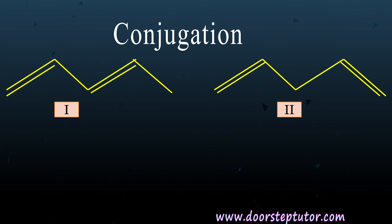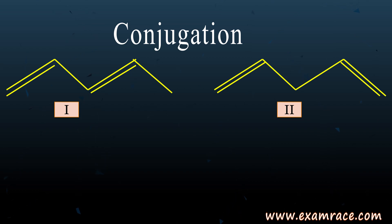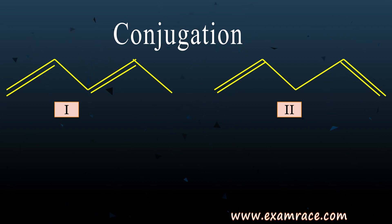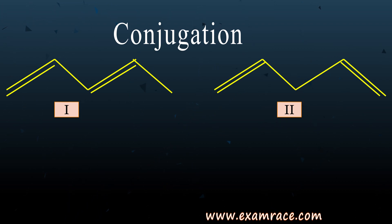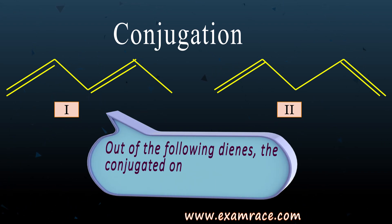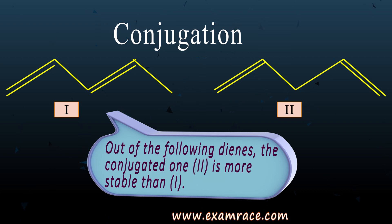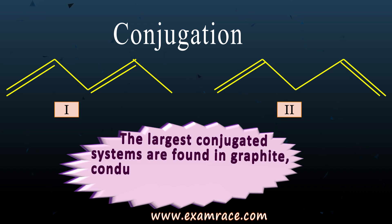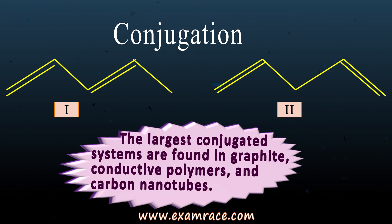We can see the overlap of one p orbital with another p orbital with the sigma bond intervening. In the second structure, there is a double bond, single bond, single bond, then double bond — no alternation — so the bonds are isolated from each other and that structure is less stable. The largest conjugated systems are found in graphite, conductive polymers, and carbon nanotubes.